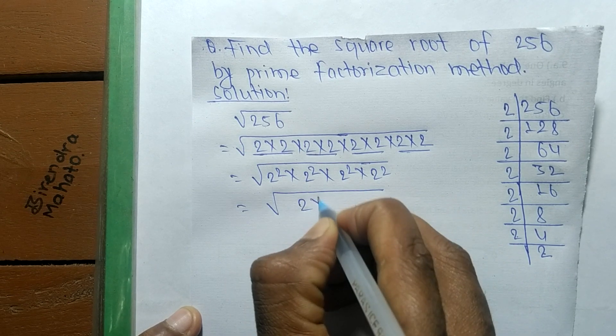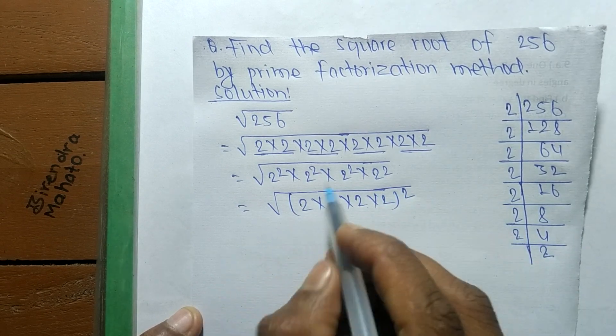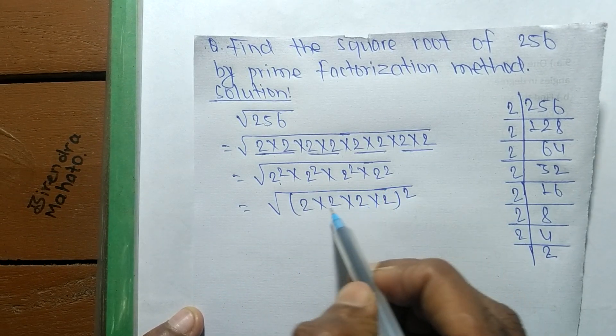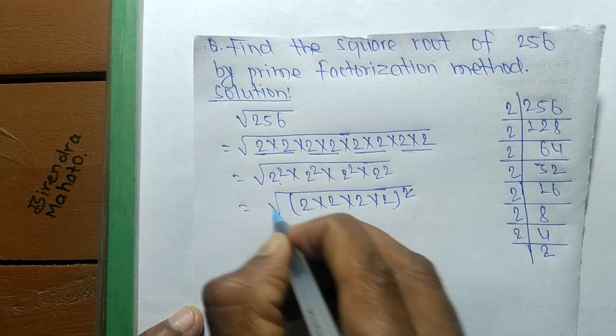So it can be 4 times 2, whole squared. So 2 squared is present 1, 2, 3, 4 times. So here is 4 times 2, whole squared. Now the square and the square root cancel each other.